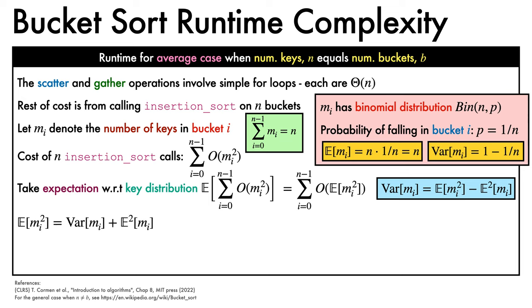We can rearrange this to get an expression for the expectation of m_i squared, which, thanks to our earlier comments, gives 1 minus 1 over n plus 1, which equals 2 minus 1 over n.